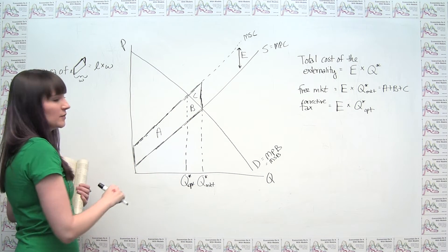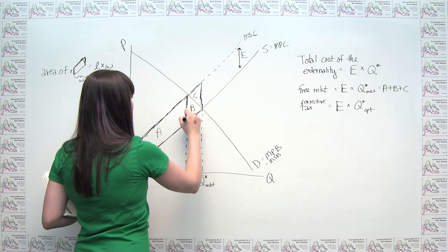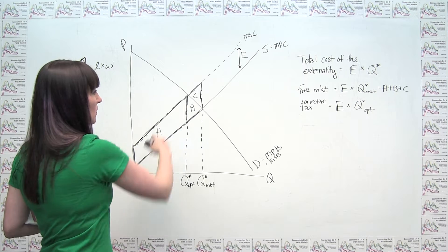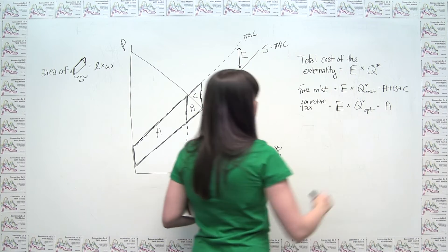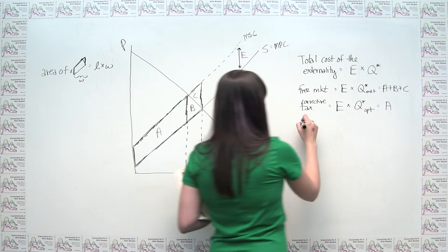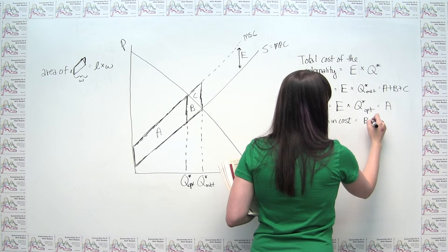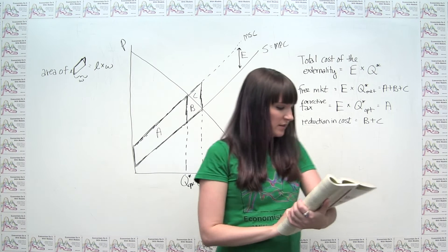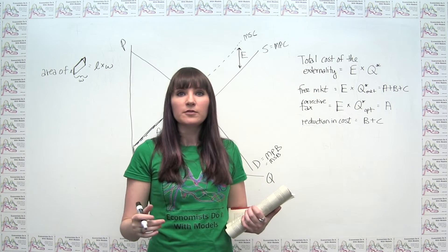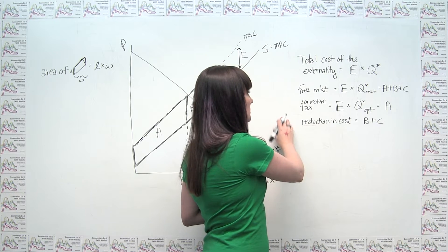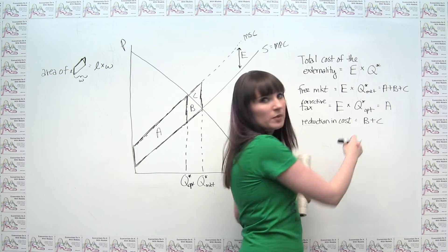Once the corrective tax is in place, the total cost of the externality is still a parallelogram, but now it stops at Q* sub OPT — so after the corrective tax, the cost of the externality is just area A. The reduction in cost is area B plus C. The benefits of the corrective taxes are exactly this: we've reduced the cost to society of the externality by amount B plus C.